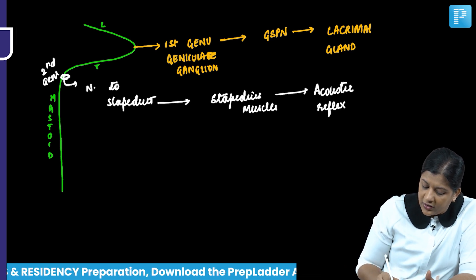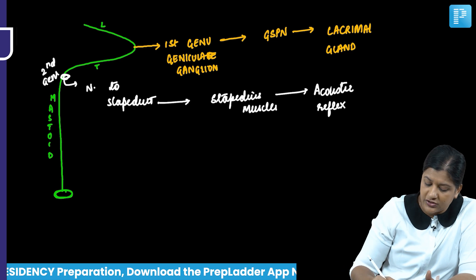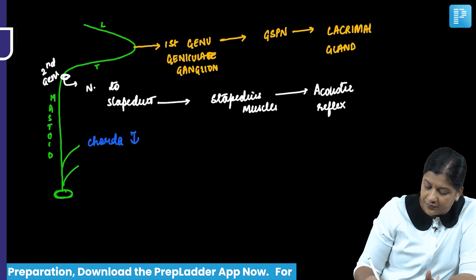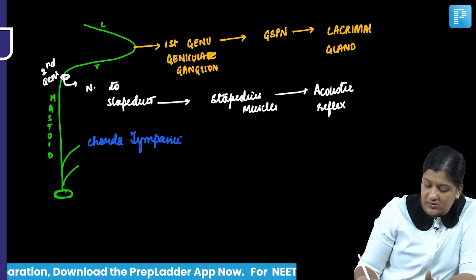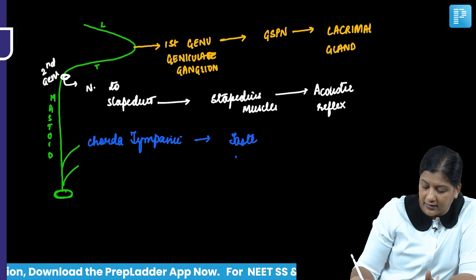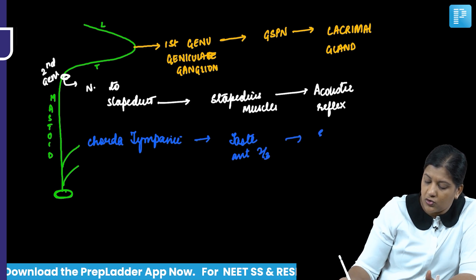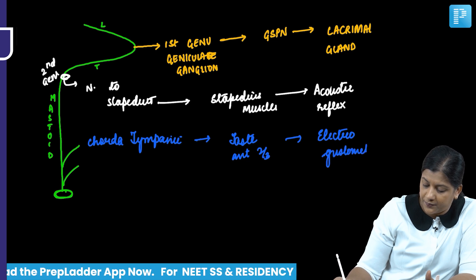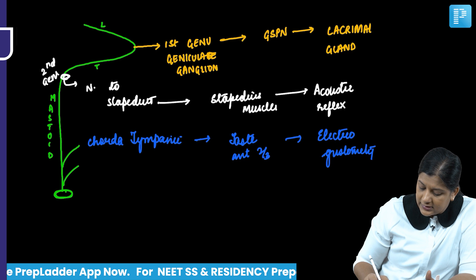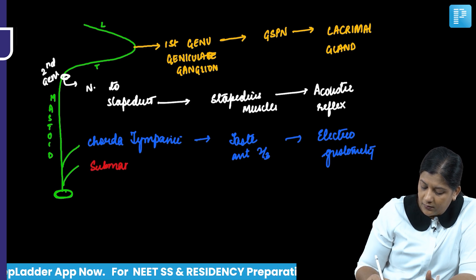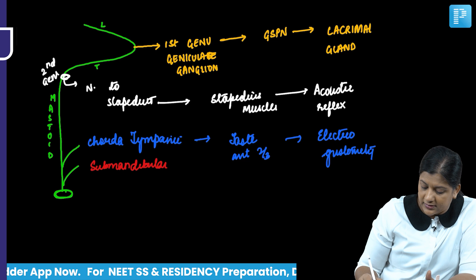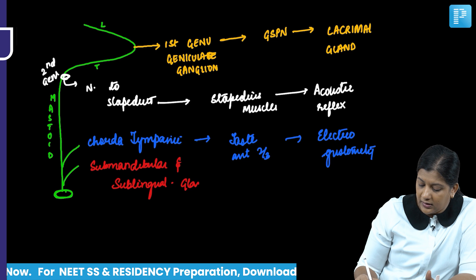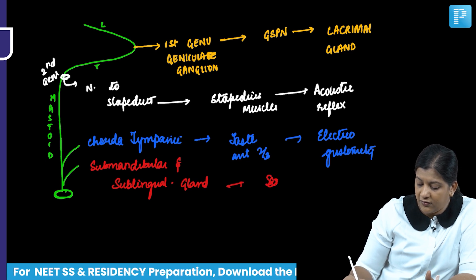Just before the facial nerve exits the stylomastoid foramen, it gives rise to two branches. The chorda tympani nerve is responsible for supplying taste sensation to the anterior two-thirds of the tongue, assessed objectively by electrogustometry. It also supplies the submandibular and sublingual salivary glands via the lesser petrosal nerve, assessed by salivary flow testing.